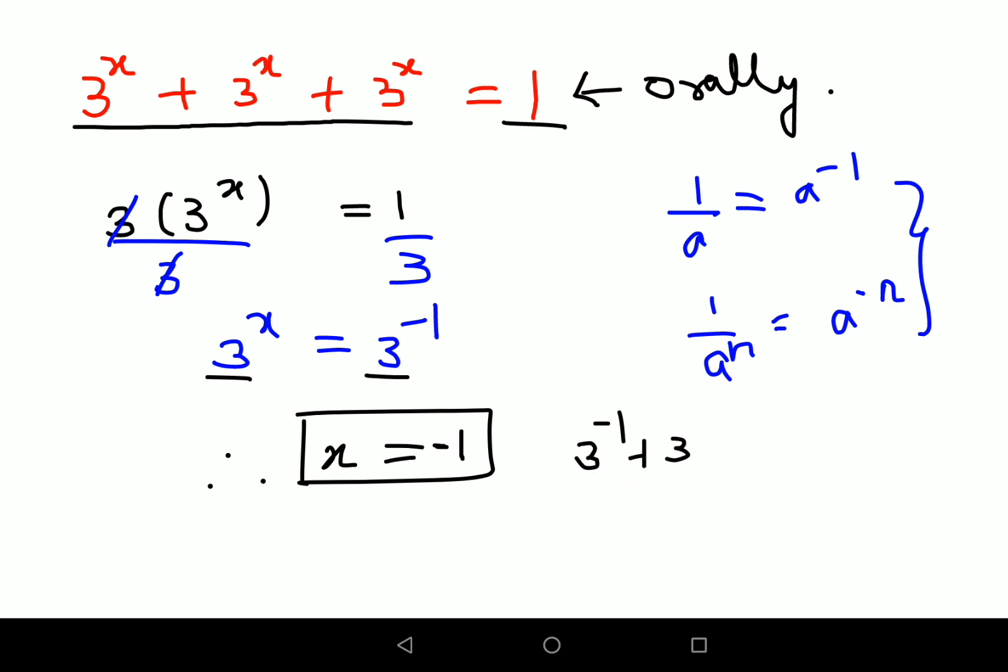3^(-1) can be written as 1/3. So 1/3 + 1/3 + 1/3. The denominators are the same, so I can directly add the numerators: 1 + 1 + 1 = 3. This gives us 3/3.